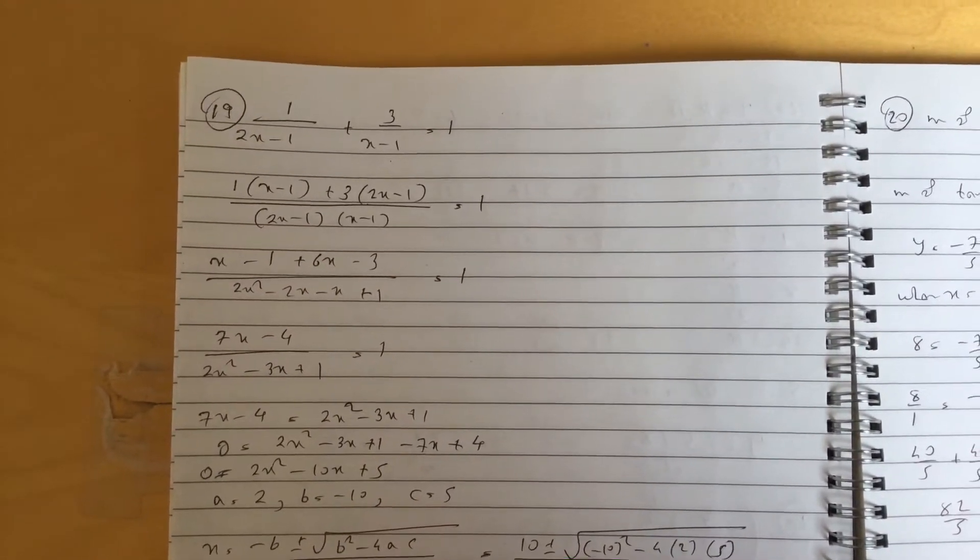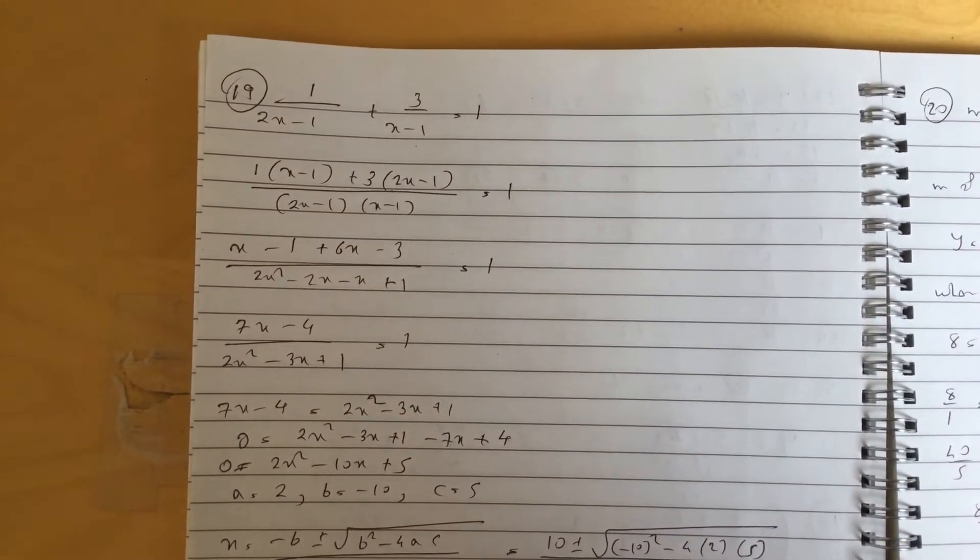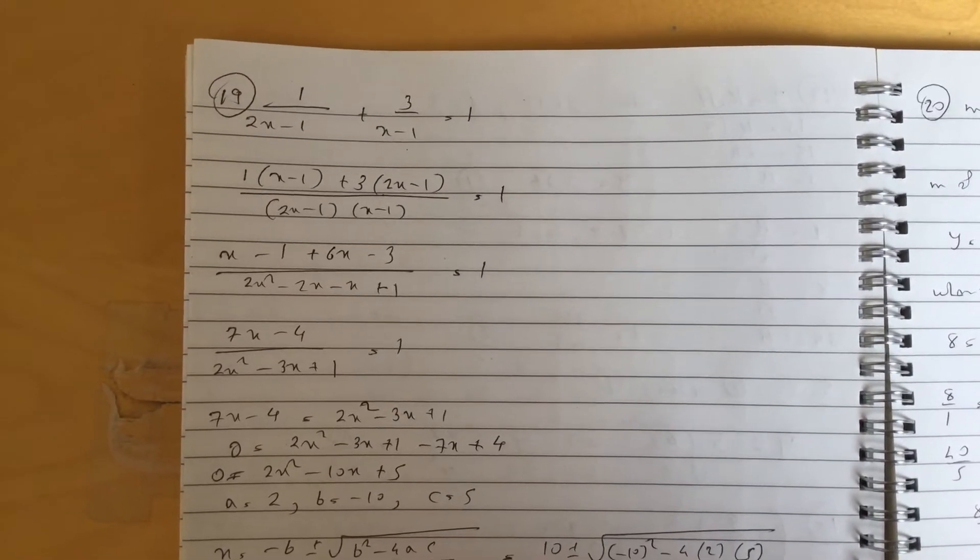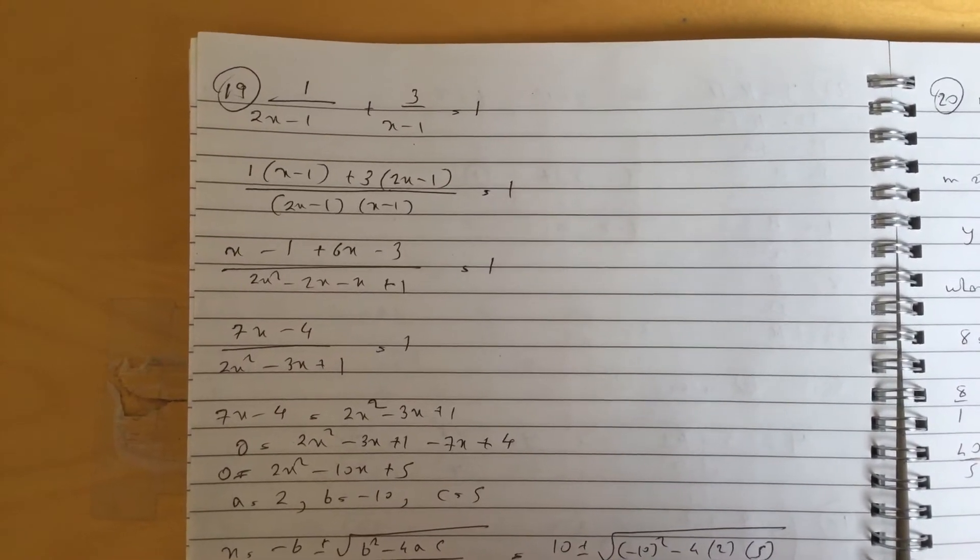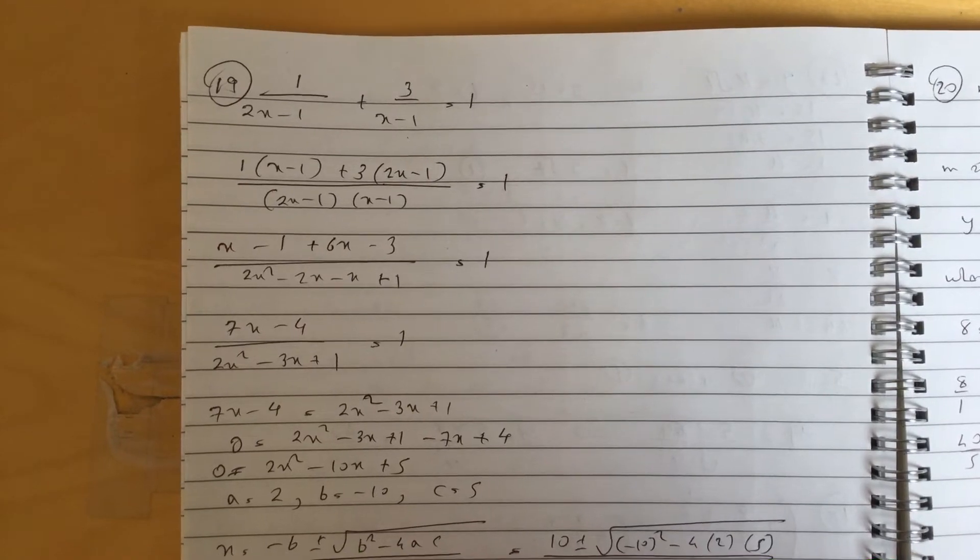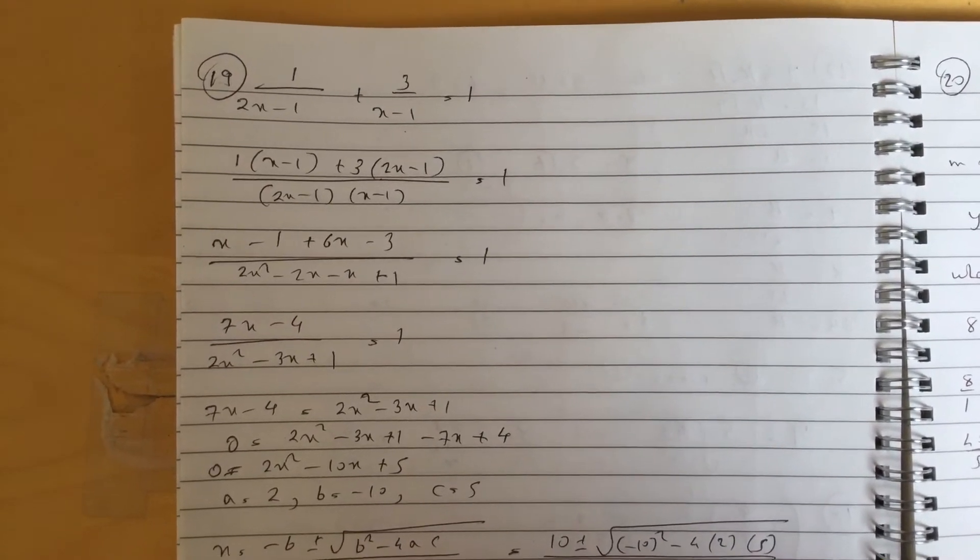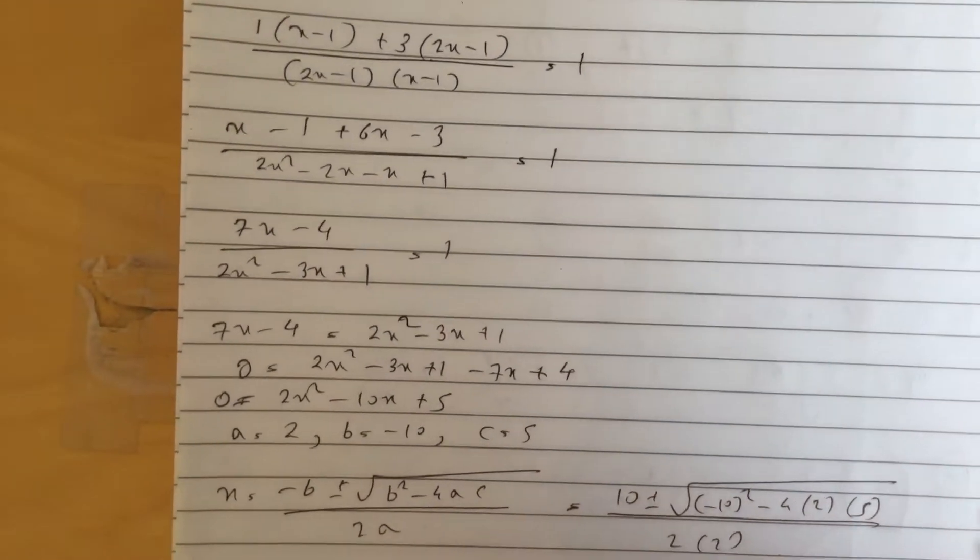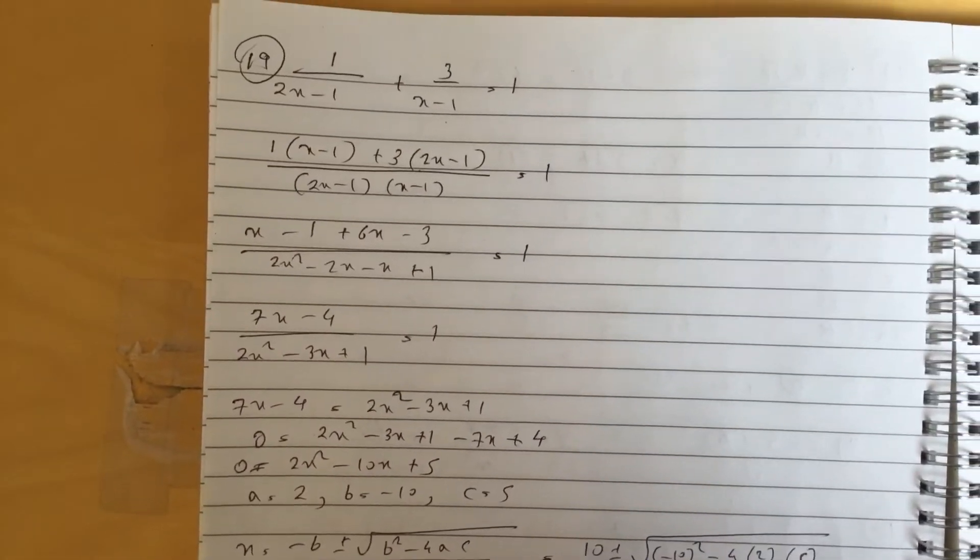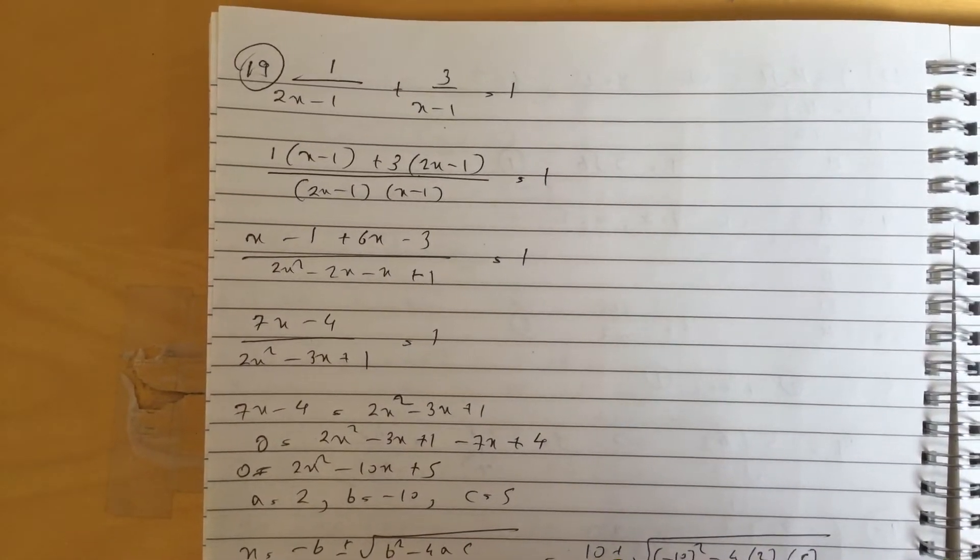Okay guys, so this is part two for the solutions. We've got just three questions left. This is an algebraic fractional equation question. What I did is I combined them to a common denominator, cross multiplied, simplified the tops and the bottoms, and you get 7x minus 4 over 2x squared minus 3x plus 1 equals 1.